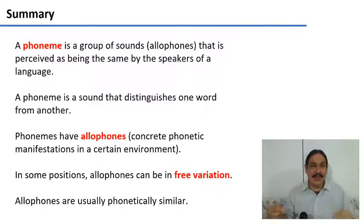And the phonemes have allophones, the aspirated P, the unaspirated P, which are concrete phonetic manifestations. There are some positions where allophones can be in free variation. For example, at the end of words in English, P and unreleased P are in free variation. And allophones are usually phonetically similar, as we can see from all the examples with P.